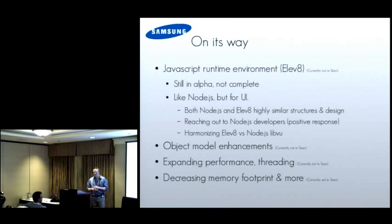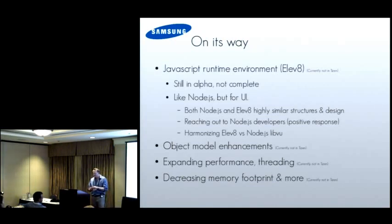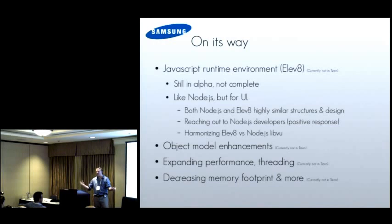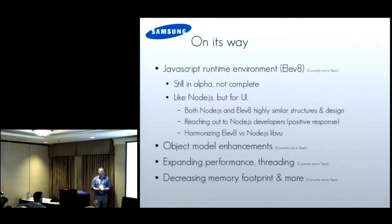We've been reaching out to Node.js developers, and they've been actually quite positive. We're improving object models - yes, I know, everyone wants to have their own object model these days. We have looked at GObjects, but we're actually implementing something that's more of a hybrid between classical object structures and something a bit more dynamic, like JavaScript or Lua or Python. It's a kind of hybrid model in between, implemented on top of C. That makes our lives much easier in implementing our libraries. We're improving performance all the time, adding more threading support, and trying to decrease memory footprint wherever we can.